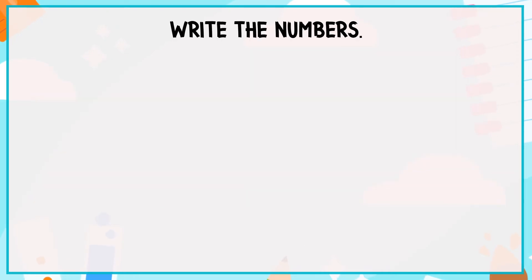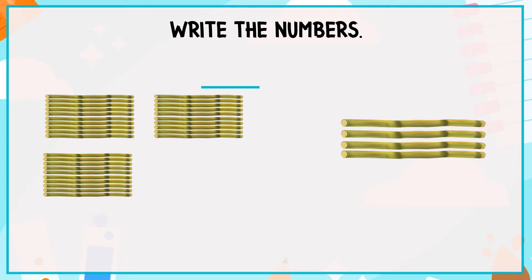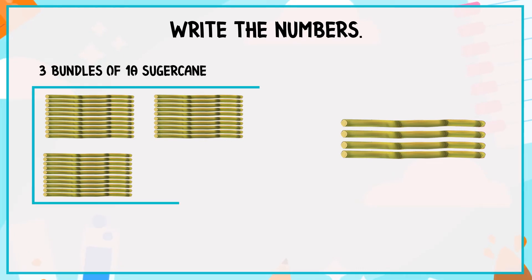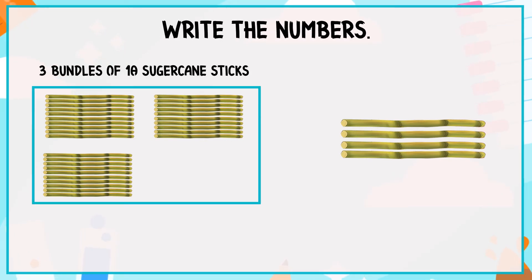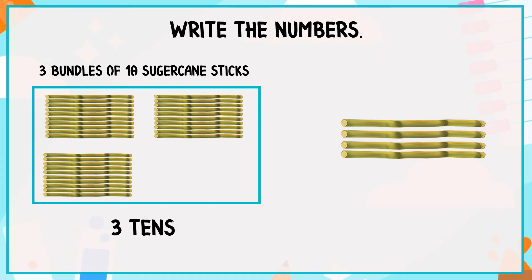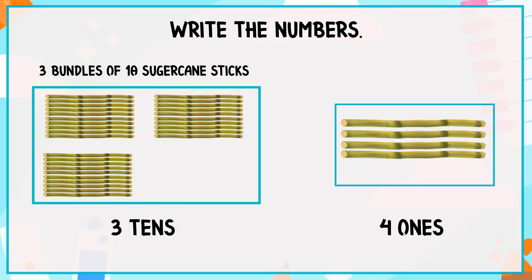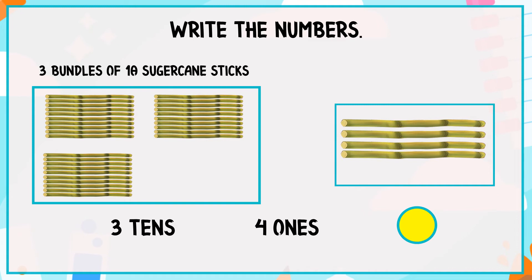Write the numbers. These are 3 bundles of 10 sugarcane sticks in each. So, it is 3 tens and these are 4 ones. So, 3 tens and 4 ones is equal to 34.